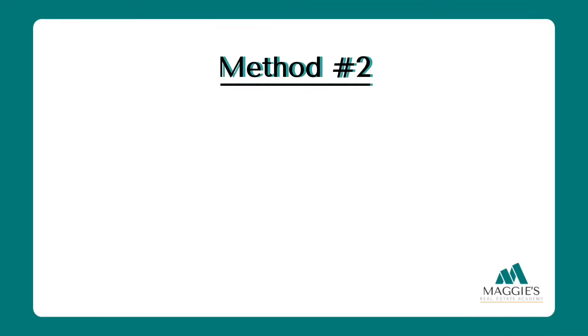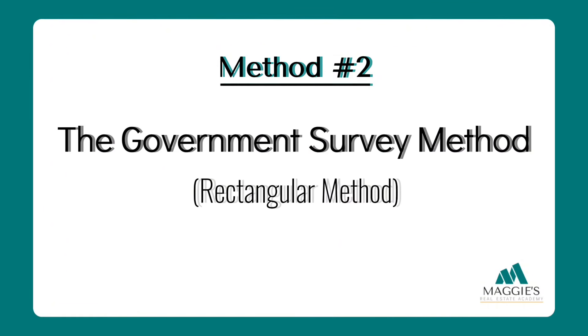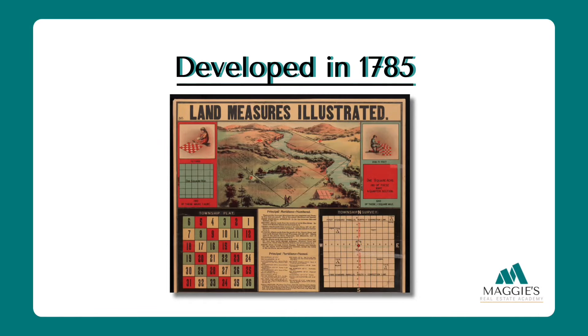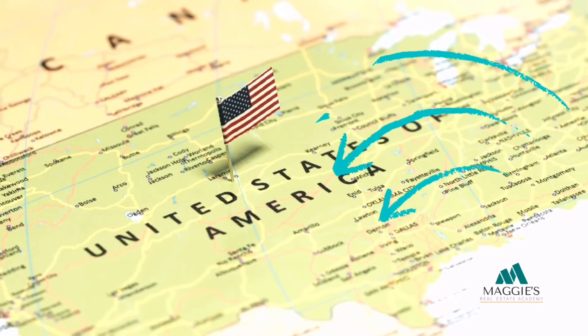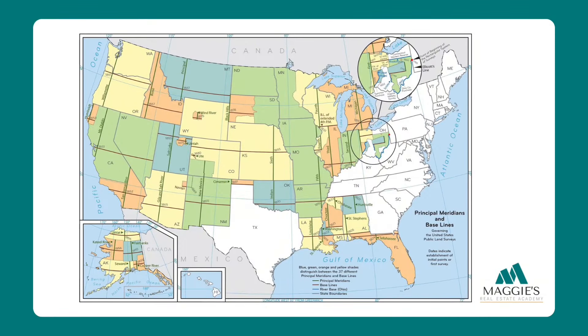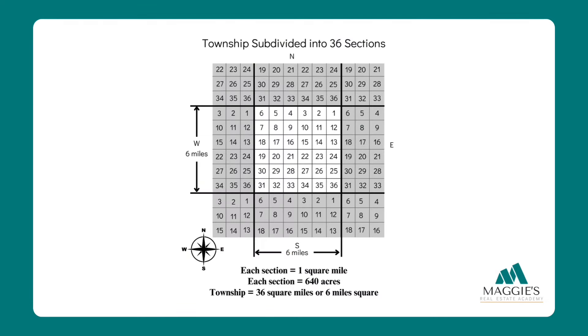Method number two: the government survey method, also known as the rectangular method. This method was developed in 1785 to allow people to claim land during the western expansion of the United States. The country was growing and needed a systematic way to divide and distribute land. This method divides the surface of the earth into a grid with numbered squares, where each numbered square can be subdivided repeatedly into smaller squares.